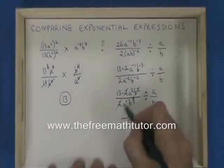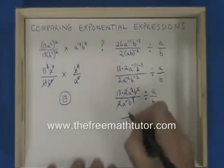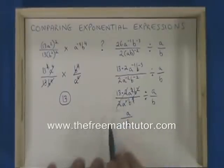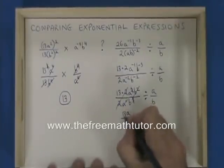The a on the bottom cancels with one of the a's on the top. I have an a on the top of the fraction. And the 13 has nothing to cancel with, it's still there on the top of the fraction.